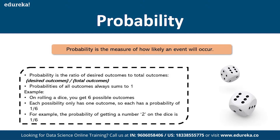There are certain terms we use in probability: random experiments, sample space, and event. An event is the outcome you expect from an experiment. Sample space is all possible outcomes — for example, when you toss a coin, the sample space is {head, tail}. A random experiment is one where the outcome cannot be predicted with certainty.